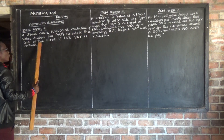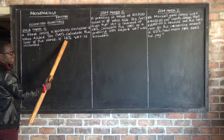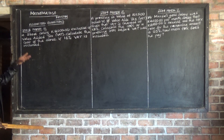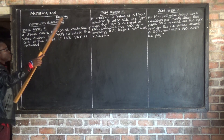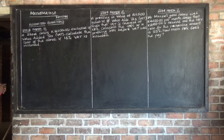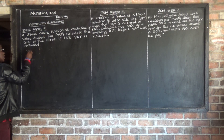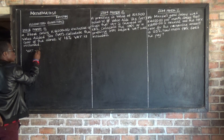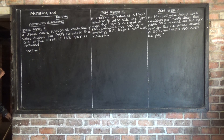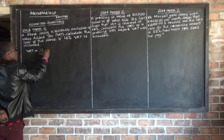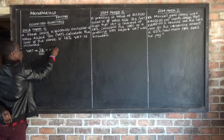Calculate the cost of the stove if 16% value added tax is included. So if we add 16% of 3,000 on this 3,000, we get the cost of the stove. So first we are going to find the VAT. Value added tax is equal to 16 over 100 multiplied by 3,000. So we want 16% of 3,000.